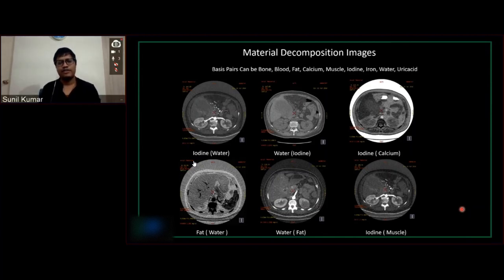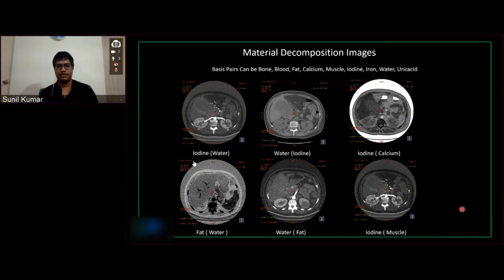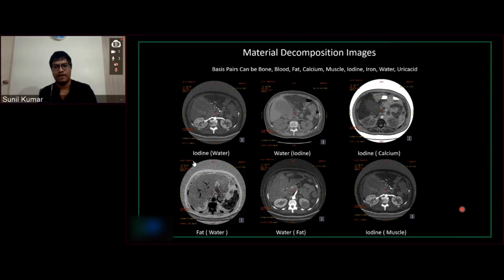Now let's see material decomposition. We have two energy levels and two compositions of attenuation of two materials when exposed to two different energies. As I gave an example, I can suppress iodine and show water, or I can show the water image suppressing the iodine. In the same way, you can suppress any known material. We have presets of materials including bone, blood, fat, calcium, muscle, iodine, iron, water, and uric acid. You can suppress one and show up the other, which is very relevant to the particular case you are referring to.